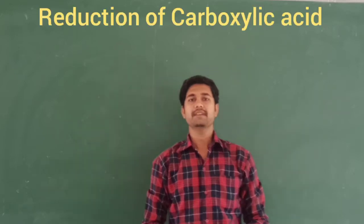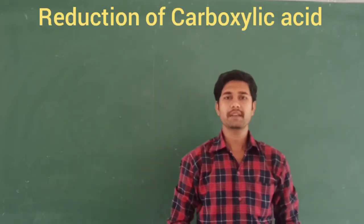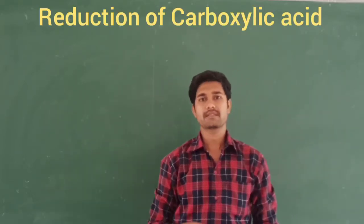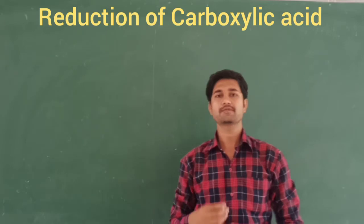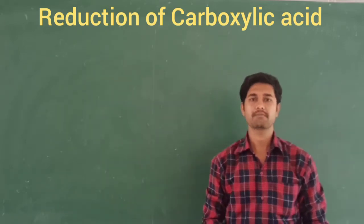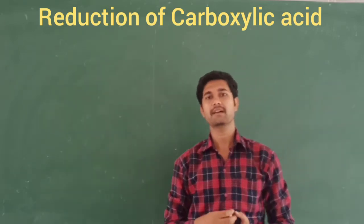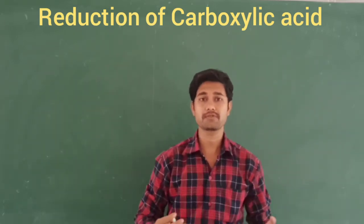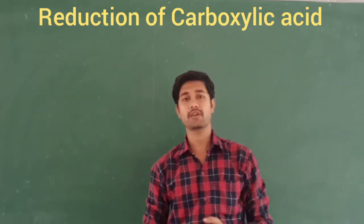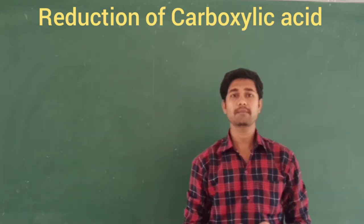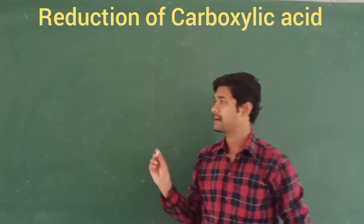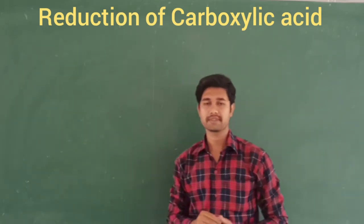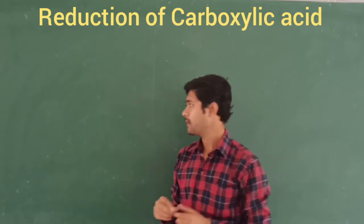Let us discuss the reduction of carboxylic acids, written as RCOOH. How is it going to be reduced? By using a strong reducing agent called lithium aluminium hydride. Let us see the beautiful mechanism of this reaction.